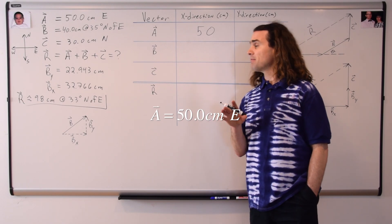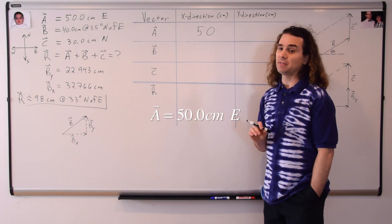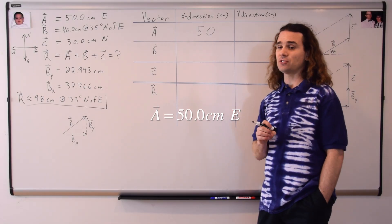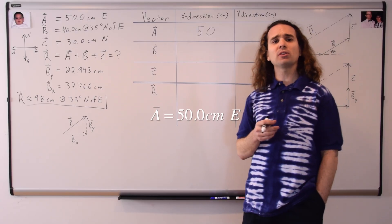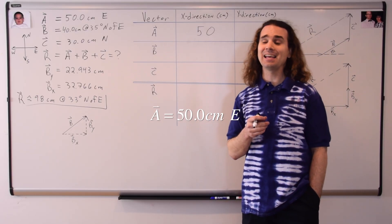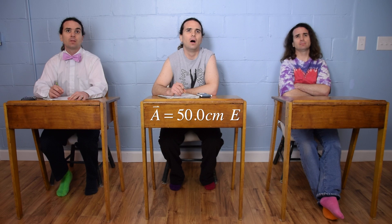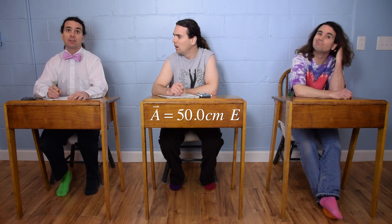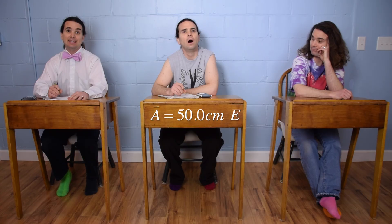Actually, Bo, the component of vector a in the x direction is 50 centimeters, but the component of vector a in the y direction is not also 50 centimeters. Who can tell me what the component is of vector a in the y direction? Vector A is only in the x-direction, so it doesn't have a y-component, so the y-component of vector A is zero.